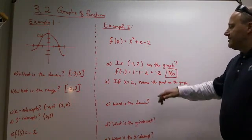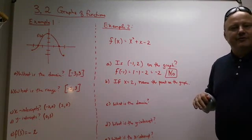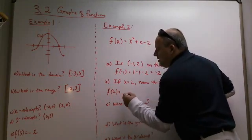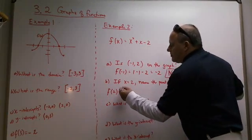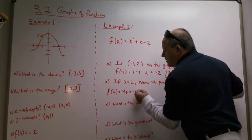And I said, well, what if x is 2? Then we'll name a point on the graph. So it's kind of like the first question asked in a little different way. So put 2 in for x and see what you get. 2 squared is 4, plus 2, minus 2.